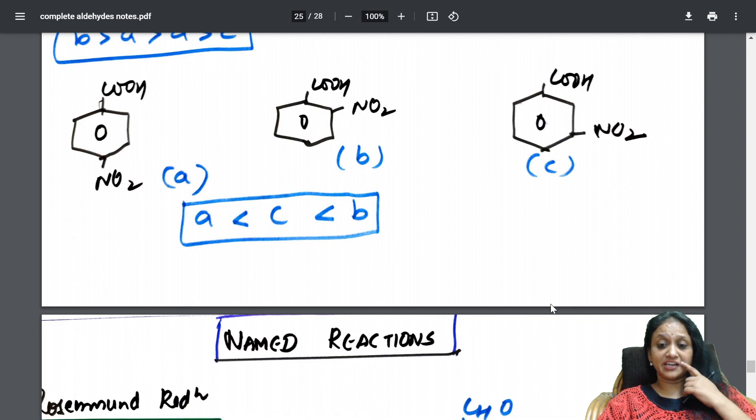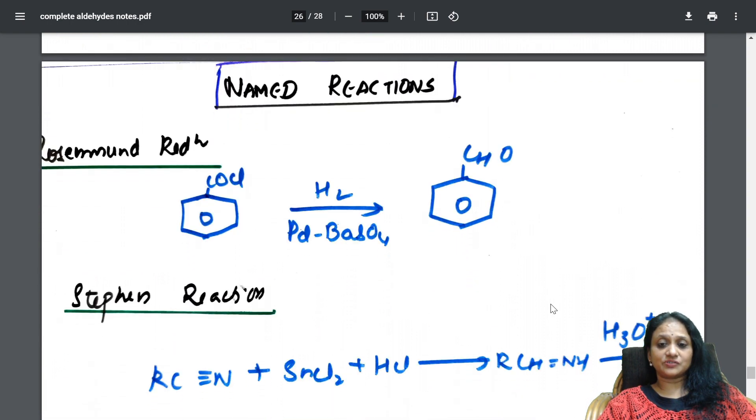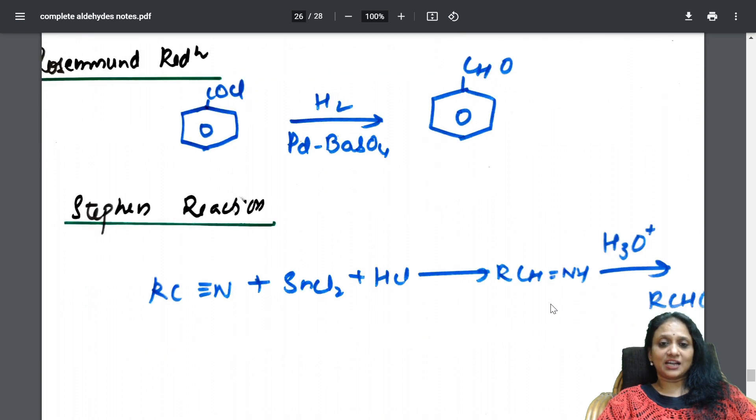And last but not the least. Name reactions. Perfect. Rosenmund reduction. Name reaction. Stephen's reduction. Okay. What name reactions. Everything I have listed out in one. Now, after that,